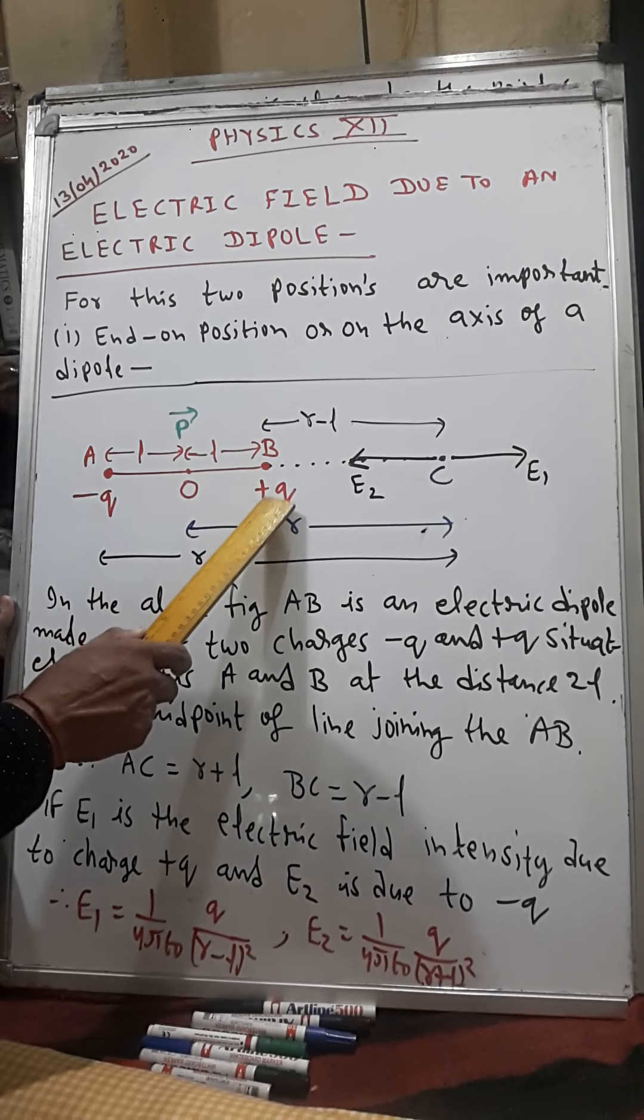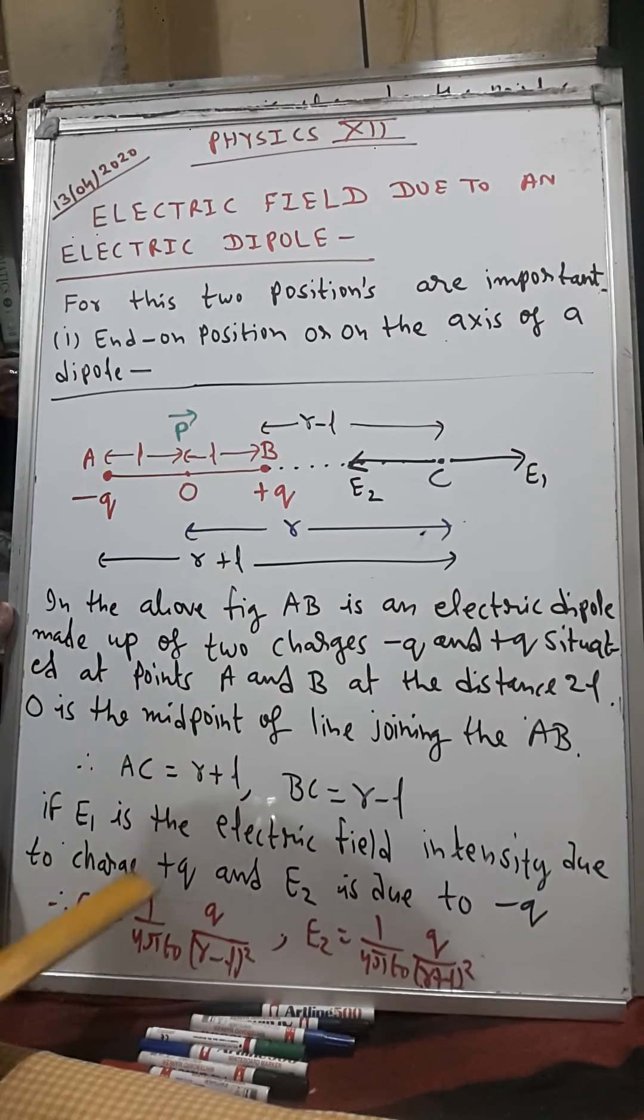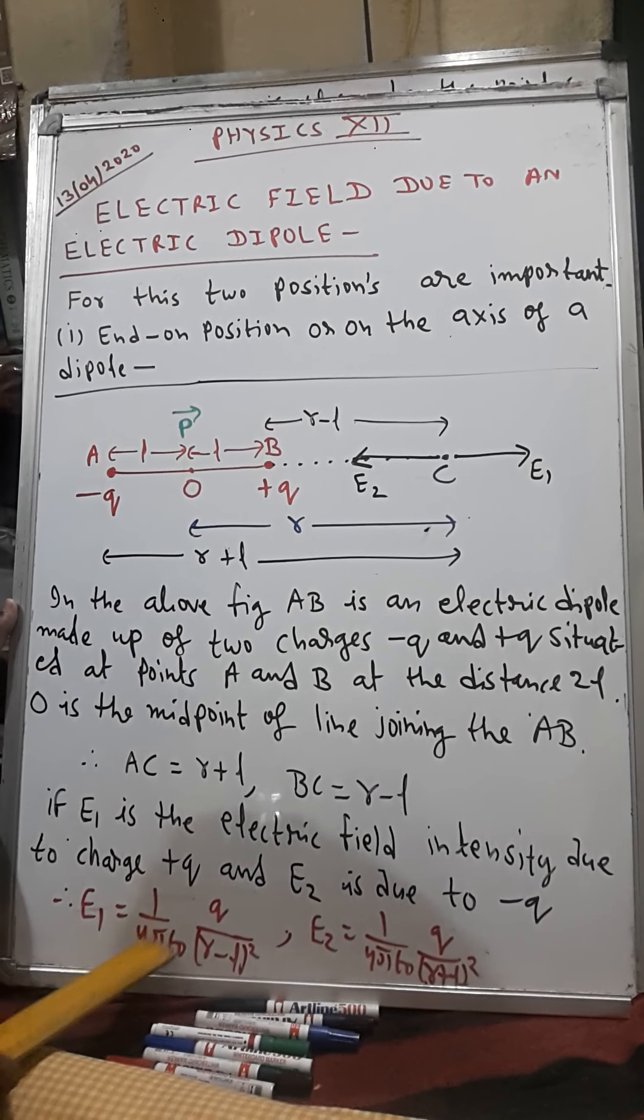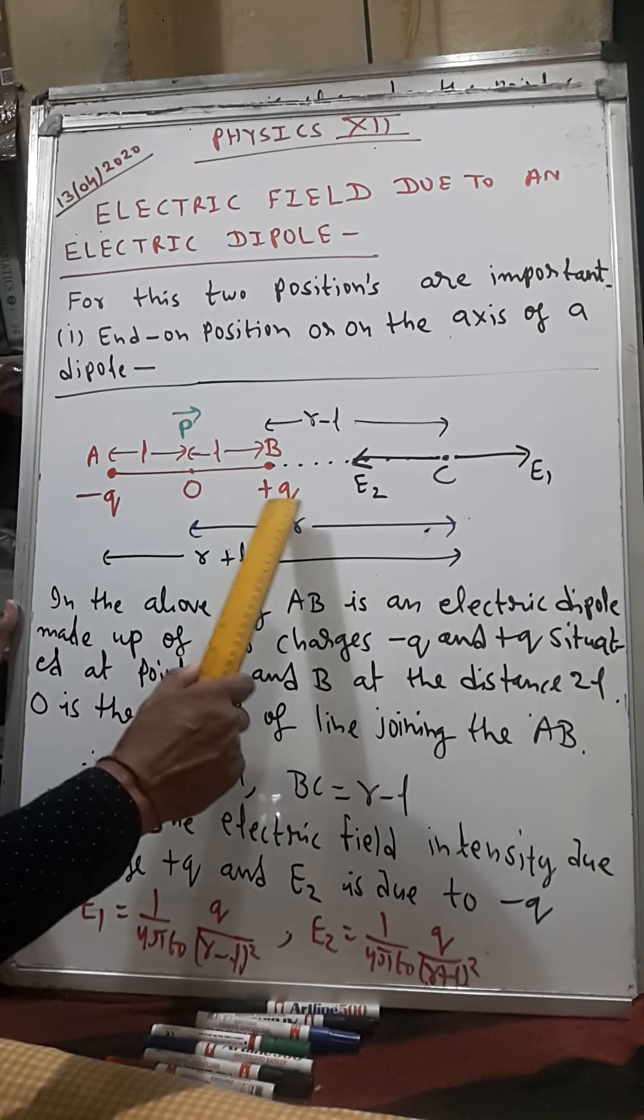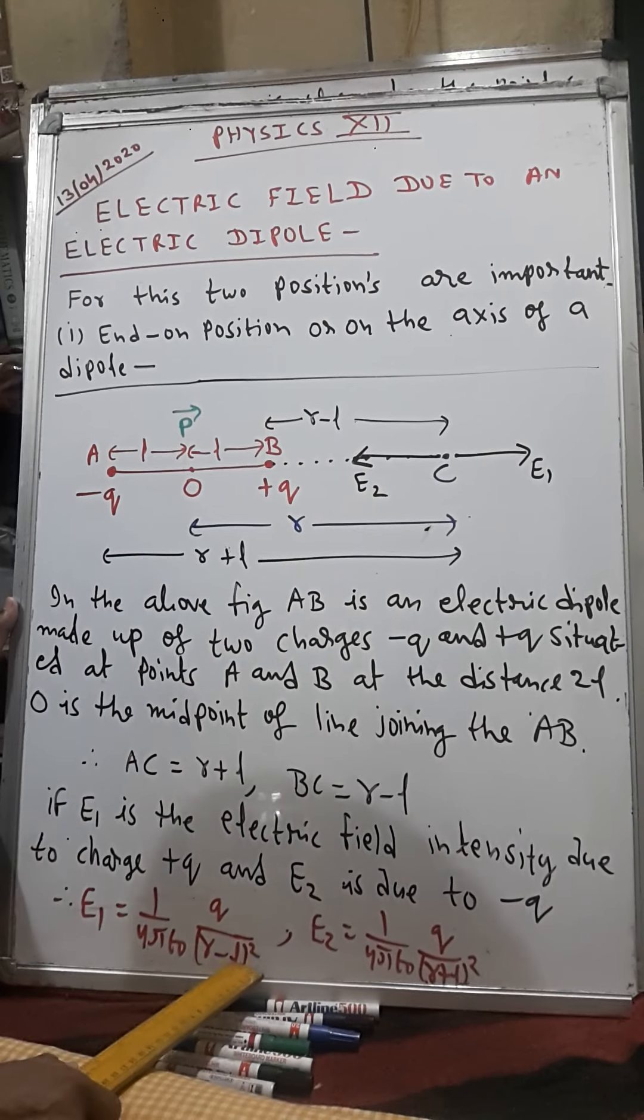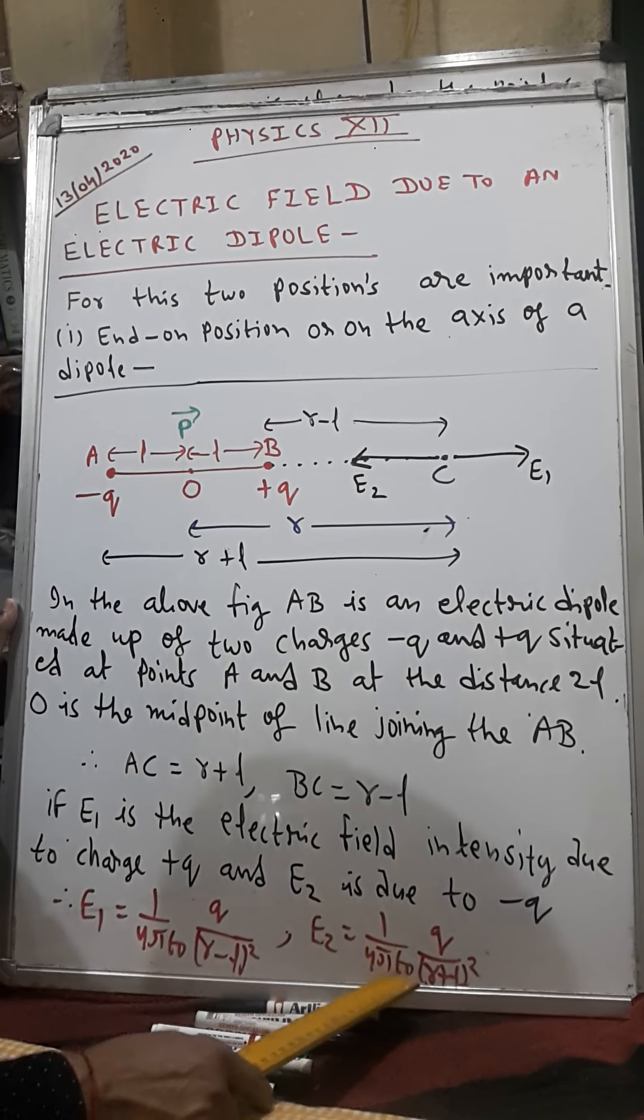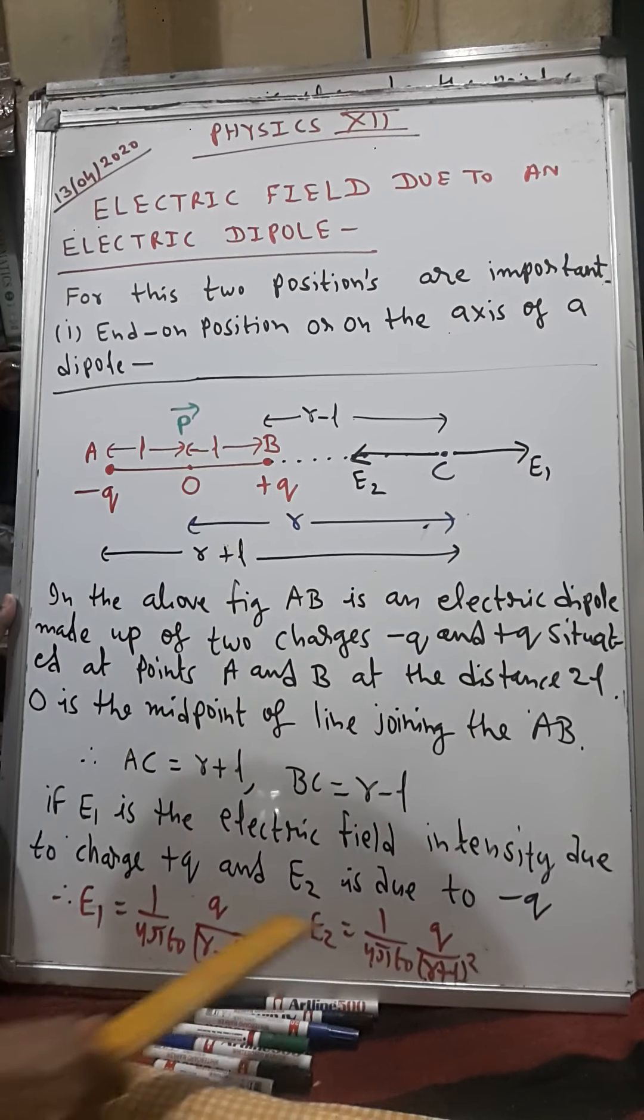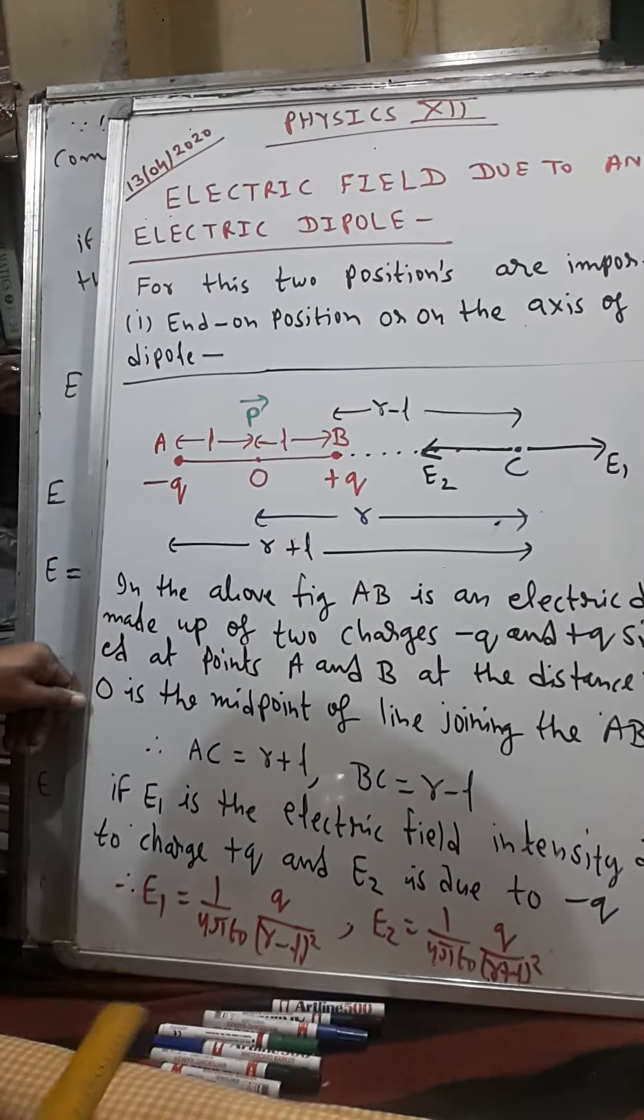Now, the electric field intensity due to this is E1. Note this: E1 is equal to 1 upon 4π epsilon naught, q upon the distance from here to here, which is r minus L, the whole square. And E2 will be 1 upon 4π epsilon naught, q upon the distance r plus L, the whole square.